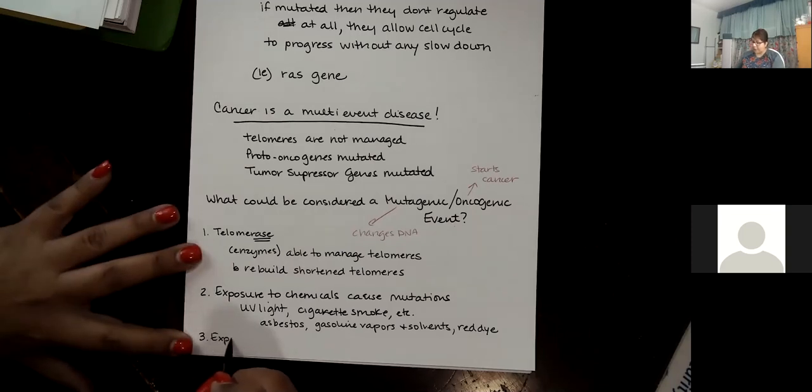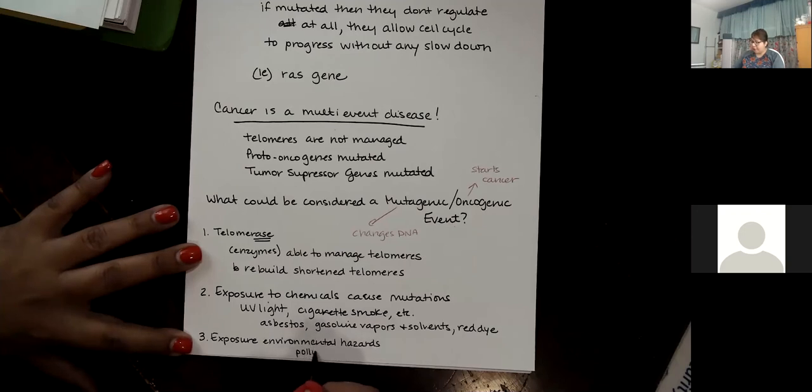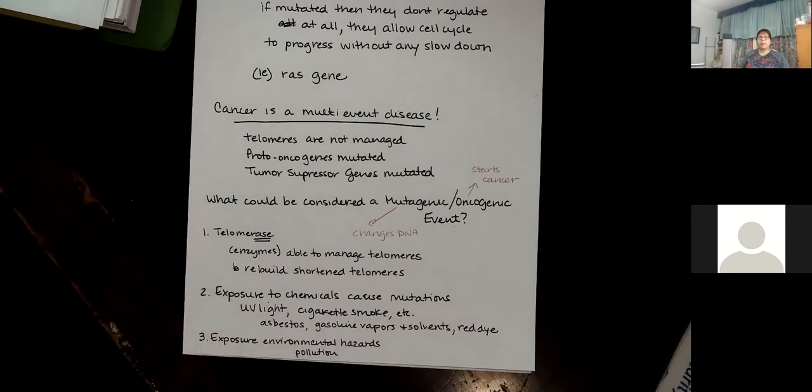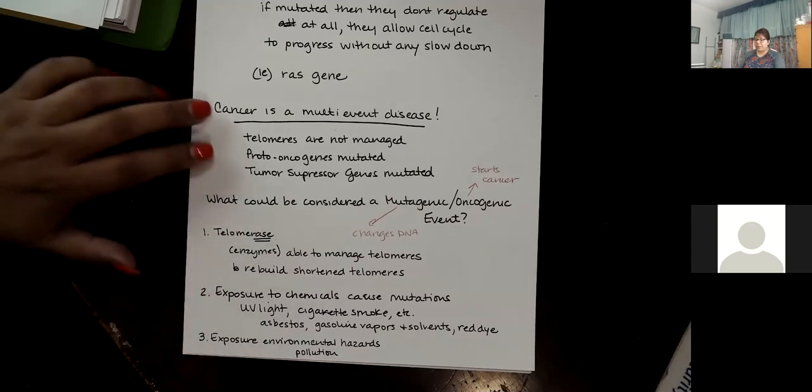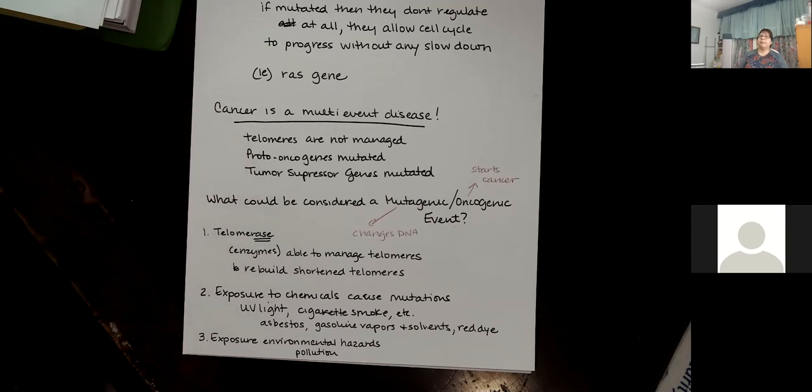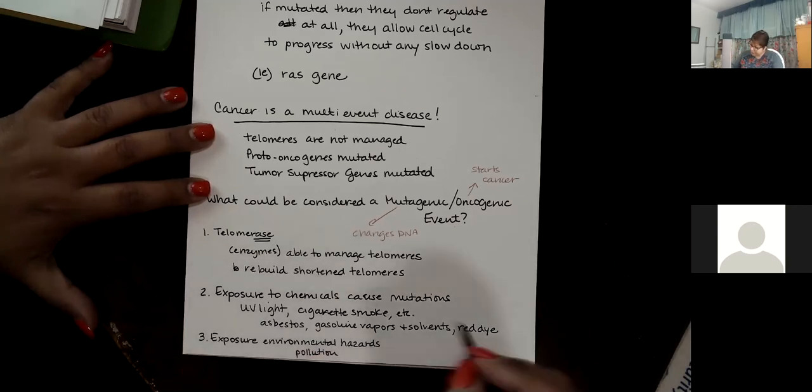Exposure to things like cigarette smoke. Cigarette smoke over the course of a lifetime can also constantly introduce chemicals into your lungs, which can lead to lung cancer. Exposure to things like asbestos, exposure to gasoline vapors, and other solvents over the course of a lifetime can constantly introduce chemicals into your system, which can eventually cause cancer. There's also even evidence that some of the things that they put into our foods are cancer-causing agents. You've probably heard that certain dyes, such as red dye, most commonly added to things like hot dogs, red dye is a food additive that has been implicated as being a possible cancer-causing agent.